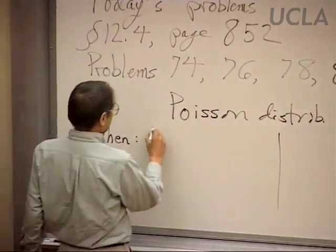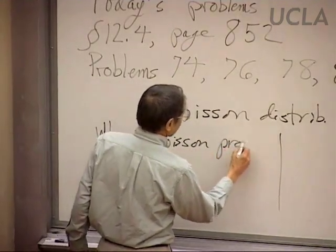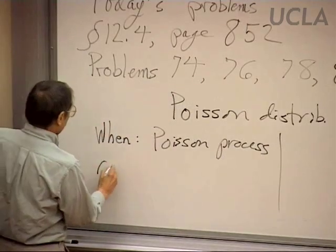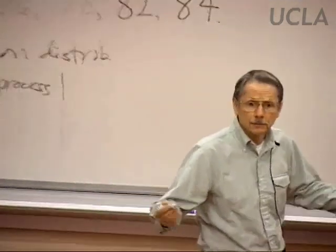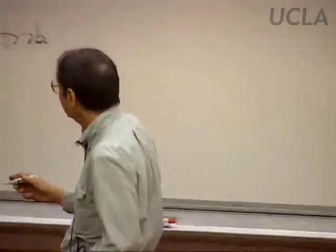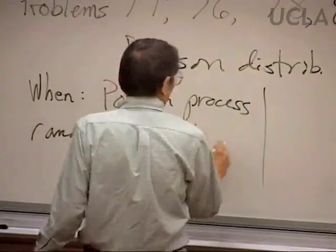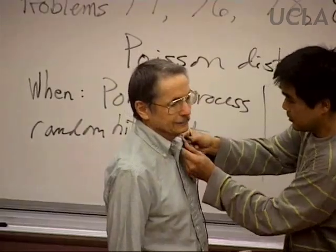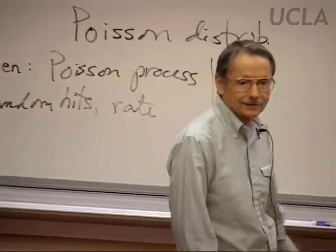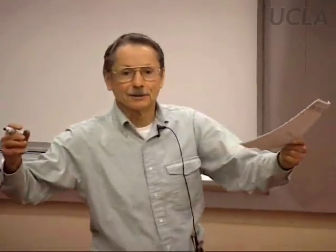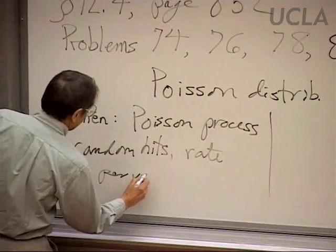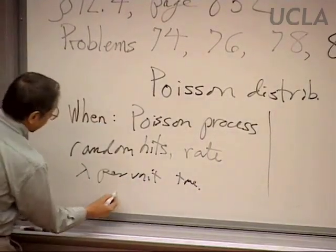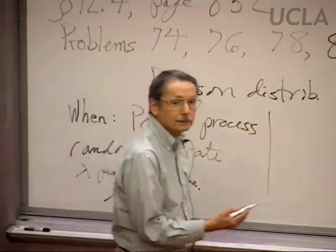So it's when we have a Poisson process, which means that hits occur more or less randomly, independent of the past, at a known long-term rate — say lambda, lowercase lambda — per unit time. There's also a second application, which we'll come to soon.